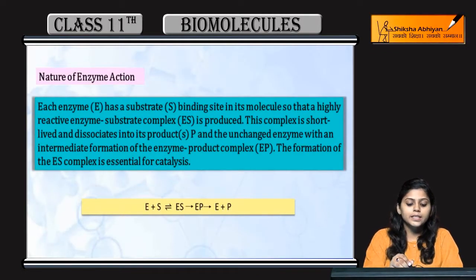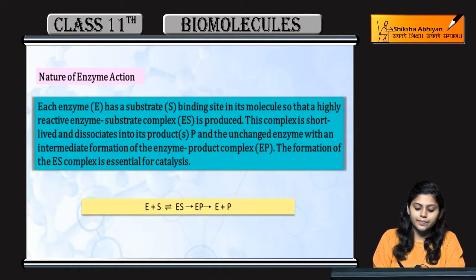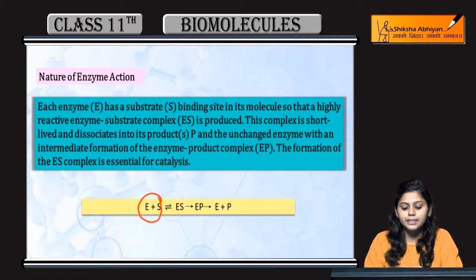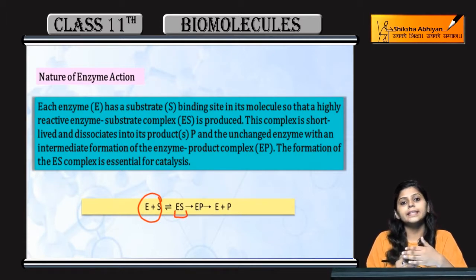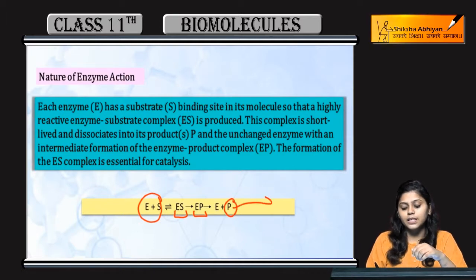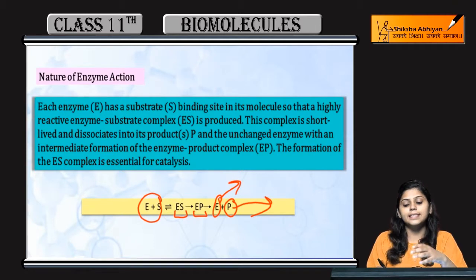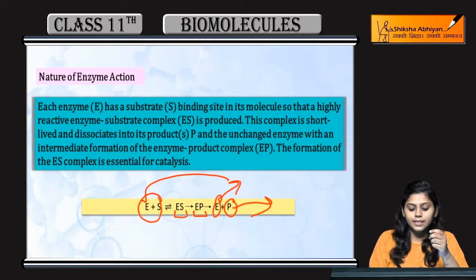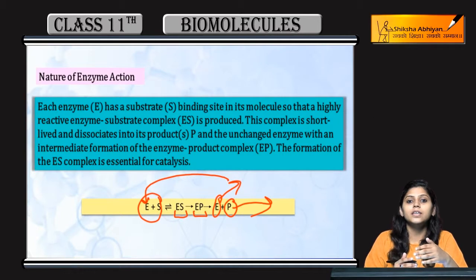Now, we will study the Nature of Enzyme Action. Enzyme work kaysa karta hai? Enzyme substrate combine karte hai, enzyme substrate complex bantah hai. Then, is ke baad eek alag stage aati hai — enzyme product complex bantah hai. Is case me kya hota hai? Product release ho jata hai from enzyme, aur enzyme again repeat kar sakta hai cycle with another substrate.